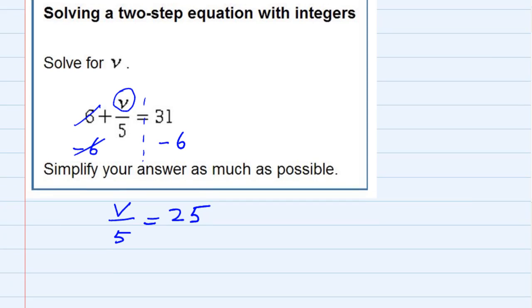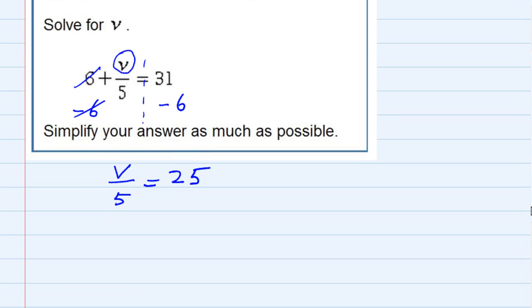And now, I just need to finish getting the v by itself, which means undoing the whole divide by 5 part. So I can undo dividing by 5 by multiplying by 5, and I can multiply the left-hand side by 5 as long as I do the same thing to the right-hand side, multiply by 5.